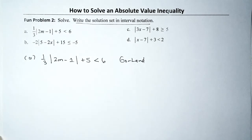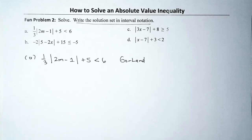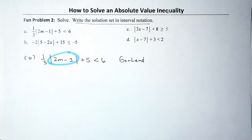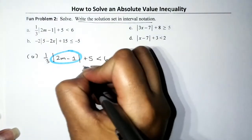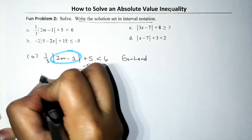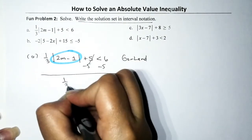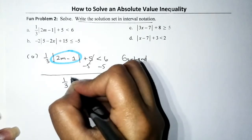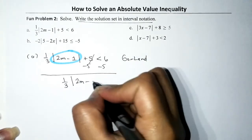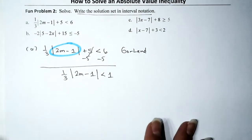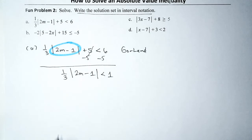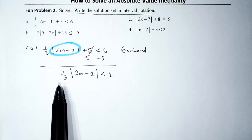To isolate the absolute value, subtract five from both sides. That leaves us with one-third times the absolute value of (2m − 1) is less than one. To get rid of the one-third, multiply both sides by 3 (the reciprocal). That leaves us with the absolute value of (2m − 1) is less than 3. The absolute value is now isolated.